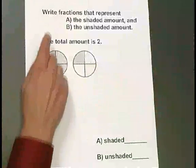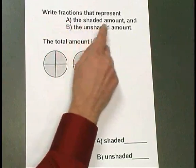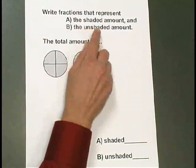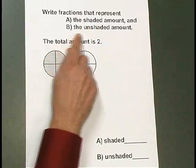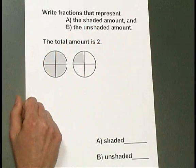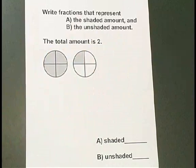As we go through this problem, I want you to think about the difference between fractions that represent less than one whole and those that represent more than one whole. Let's go ahead and read over the problem. Write fractions that represent A, the shaded amount, and B, the unshaded amount. The total amount is 2.